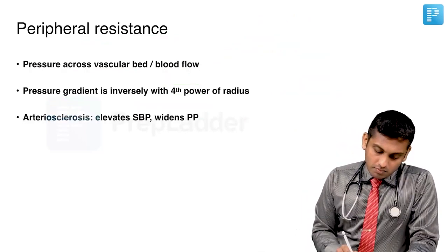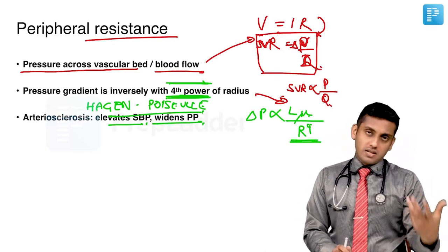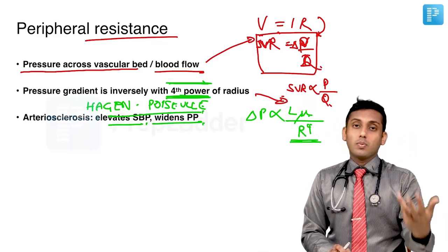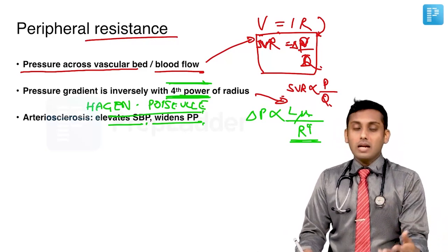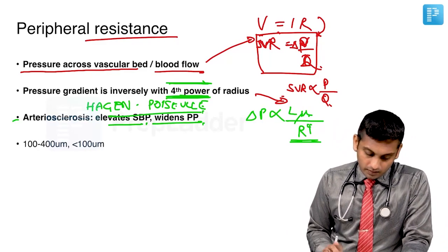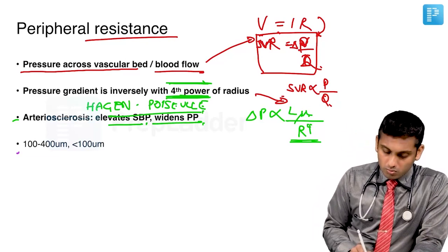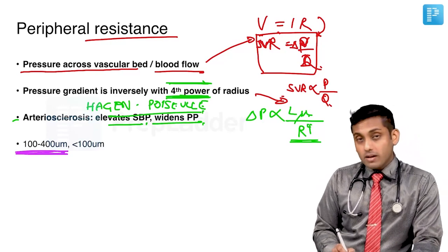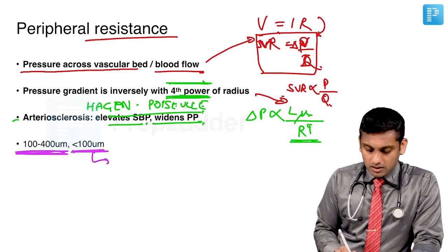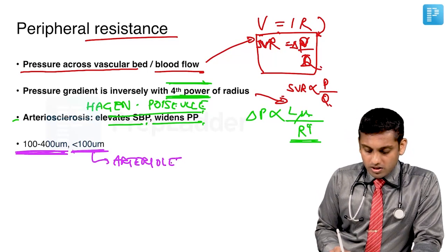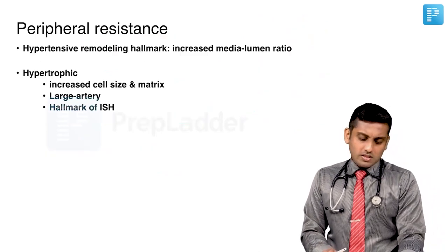In arteriosclerosis, the main change is an elevation in systolic blood pressure and the pulse pressure widens — it is nothing but stiffening of the vessels. Diastolic pressure may remain the same while systolic pressure disproportionately rises. People can have either isolated systolic hypertension or combined hypertension with significantly elevated systolic values, often seen in the elderly. The most important vessels causing hypertension are usually small arteries of 10 to 400 microns or 0.1 to 0.4 millimeter luminal diameter, and less than 100 microns are the arterioles. So arterioles and small arteries are both responsible for developing peripheral resistance in hypertension.